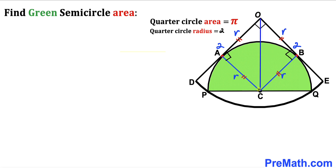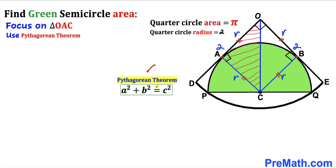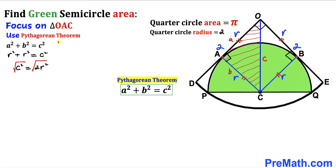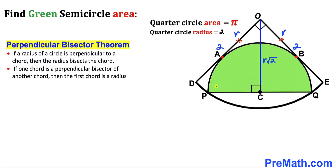Connecting centers C and O, let's focus on right triangle AOC and apply the Pythagorean theorem: a² + b² = c². Here the two legs are both r, so r² + r² = c², giving c² = 2r². Taking the square root, c = r√2. So the distance OC equals r√2.